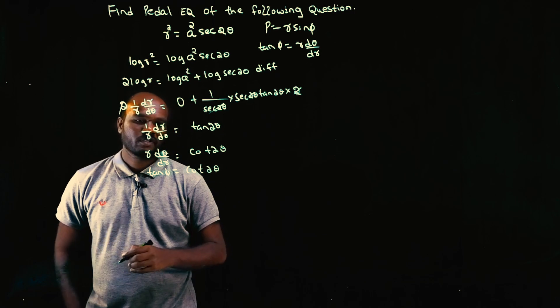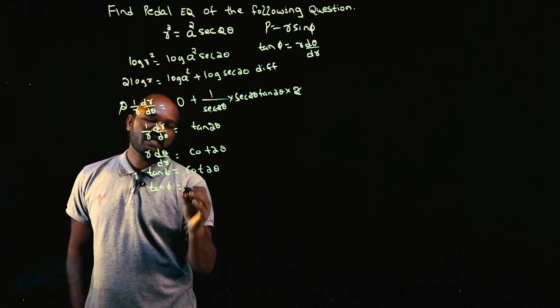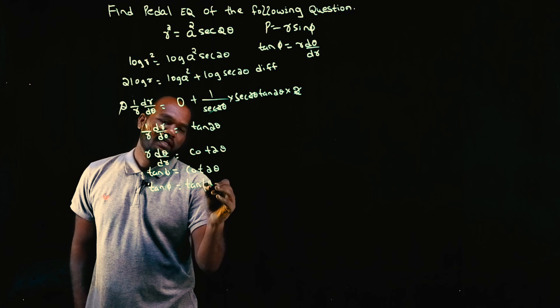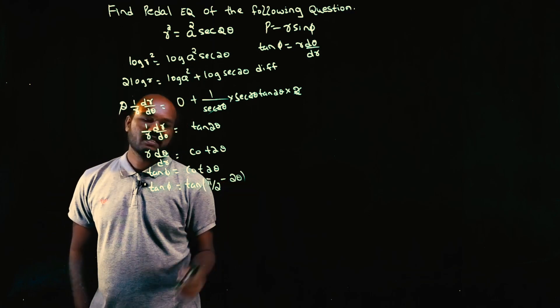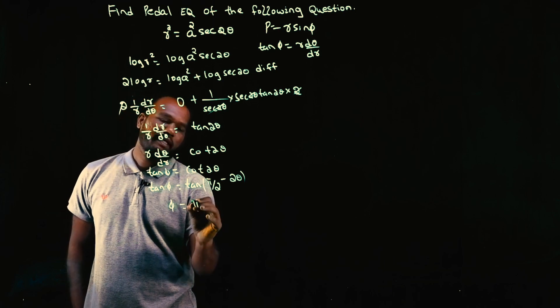Cot 2θ can be written as tan(π/2 - 2θ). So tan φ = tan(π/2 - 2θ), which means φ = π/2 - 2θ.